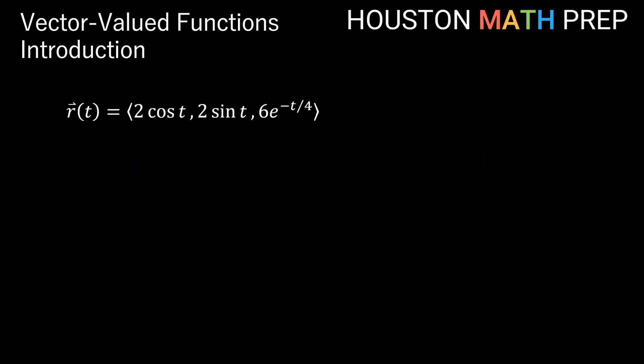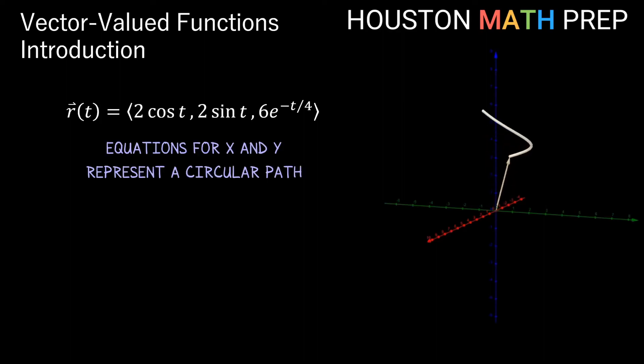One final example here, we've got r equals (2cos(t), 2sin(t), 6e^(-t/4)). Now we should be professionals by now at determining what's going on in terms of x and y.